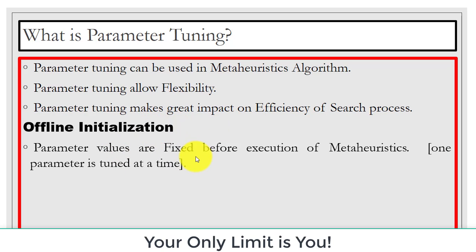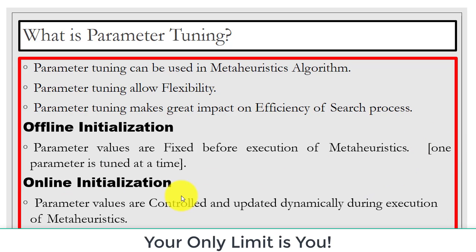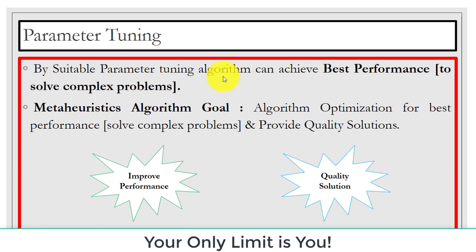In offline initialization, parameter values are fixed before execution of the metaheuristic, and we can tune one parameter at a time. In online initialization, parameter values are updated and controlled dynamically during execution. The key difference: in offline, values are fixed before execution; in online, values are changed during execution, with no restriction on tuning one parameter at a time.